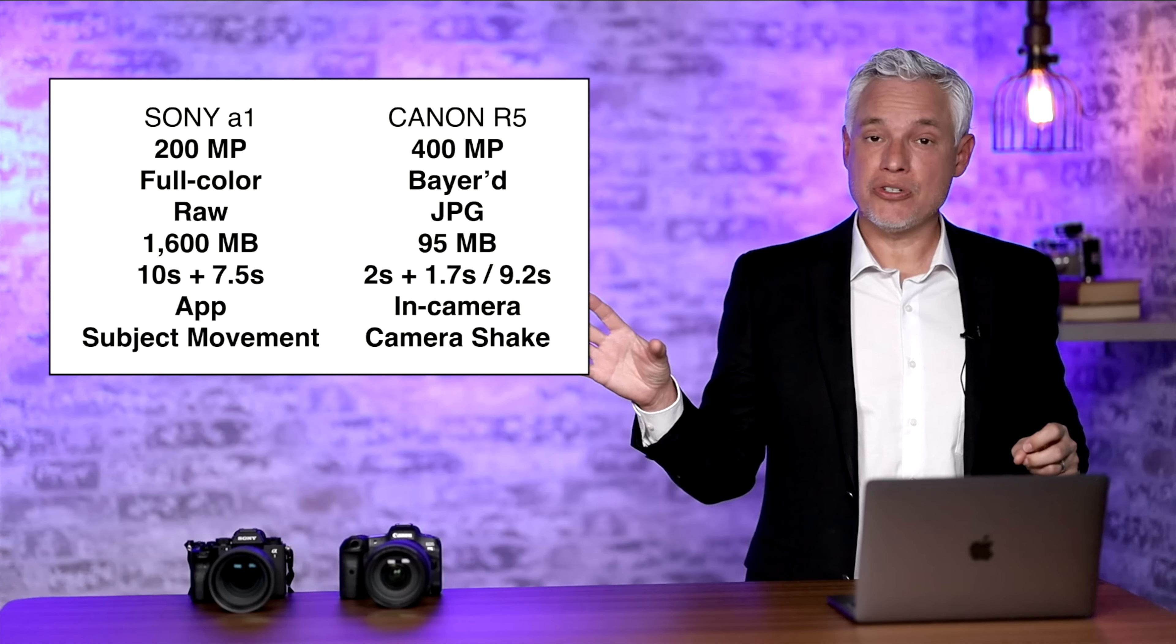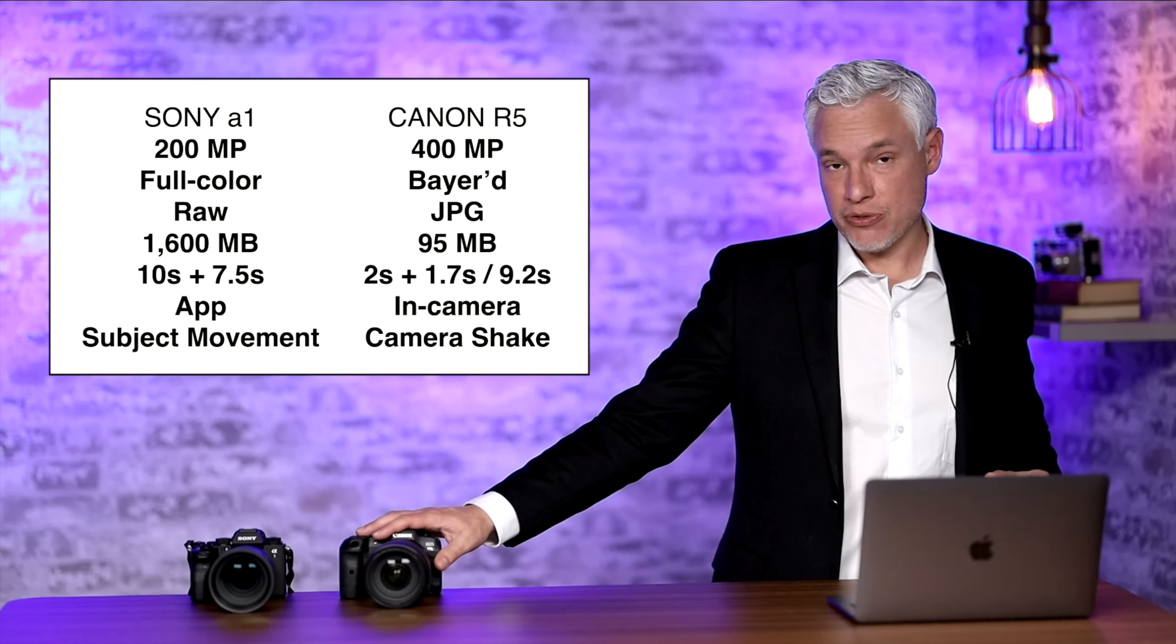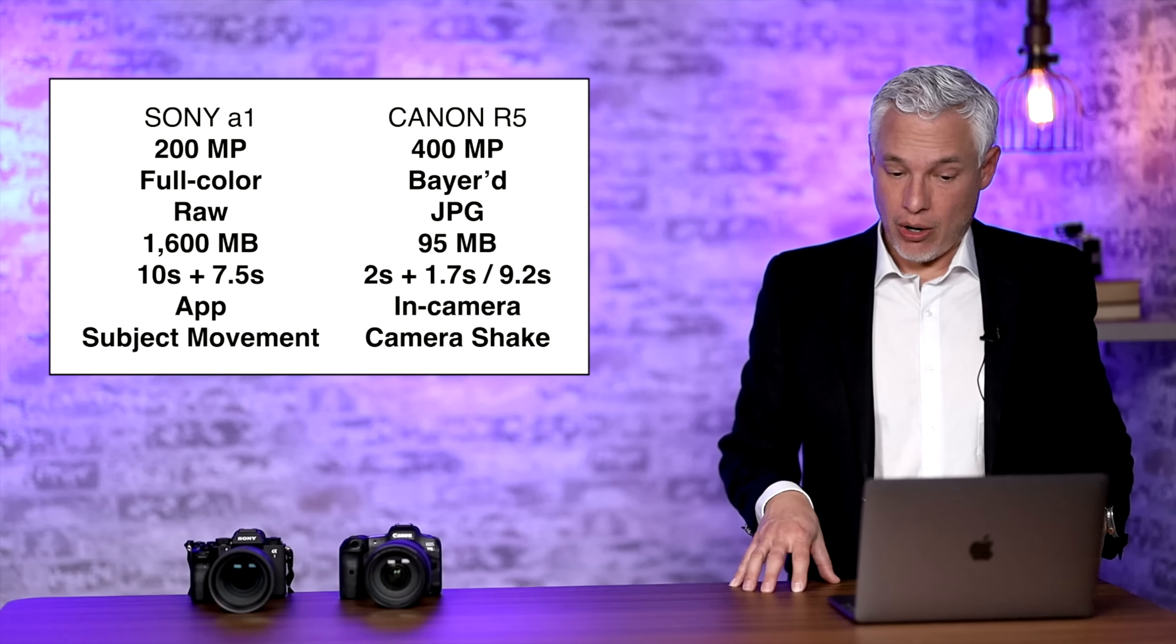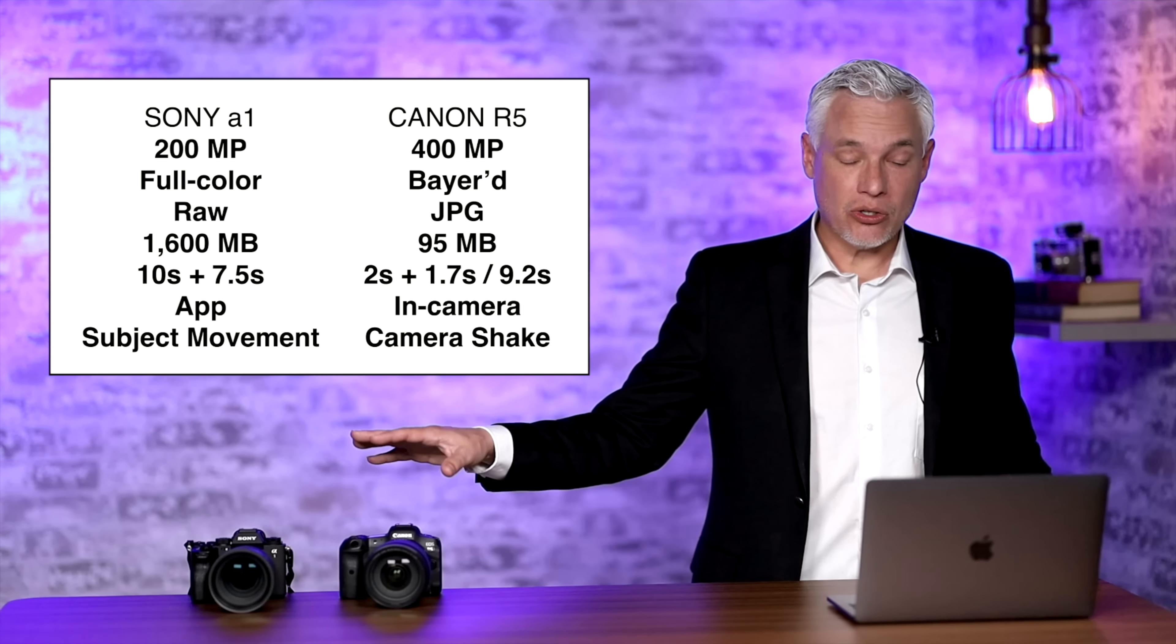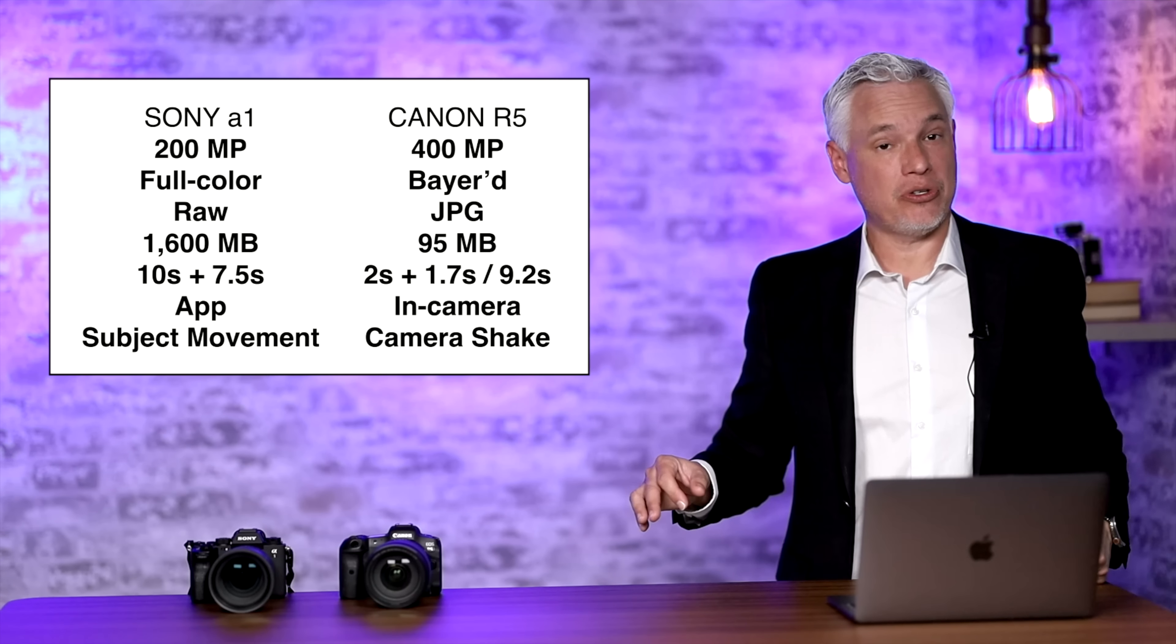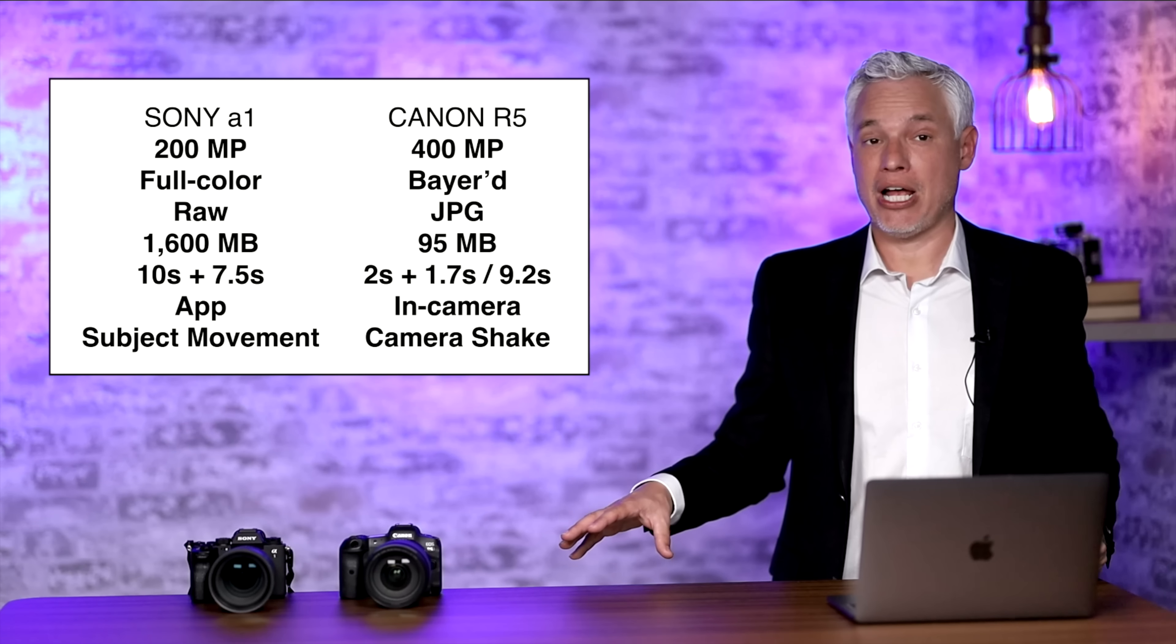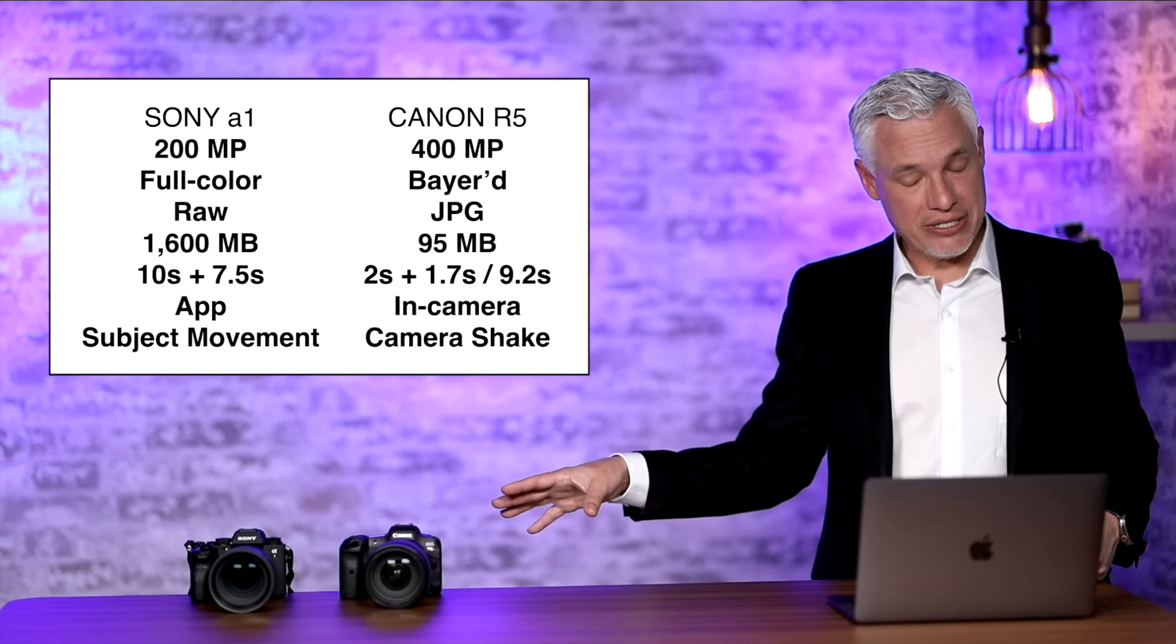To recap the differences, the Sony produces 200 megapixel files with full color information in a raw file. The Canon R5 produces 400 megapixel images in a Bayer file without full color information in JPEG form. The Sony's images are about 16 times larger than Canon's and the Sony actually takes longer to capture each image. First a two-second shutter delay was not enough to cancel out shutter shock so I had to always use a 10-second delay. So the entire time to capture the image was about 17.5 seconds during which time I could not move or touch the camera. After that I was free to use the viewfinder and take pictures.